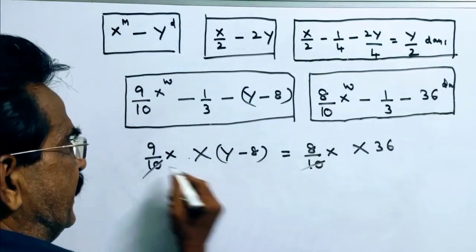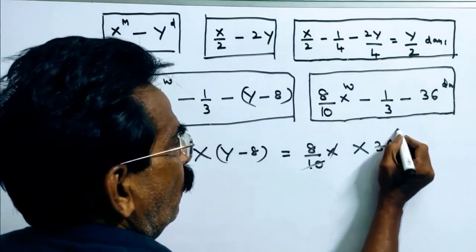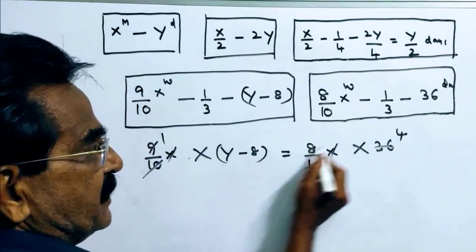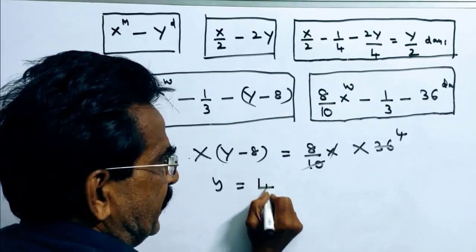First, 10 gets cancelled, X gets cancelled, 9 fours. So Y minus 8 is equal to 32, Y is equal to 32 plus 8, 40.